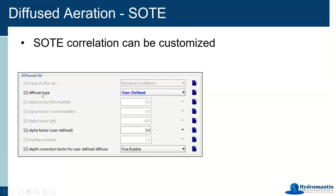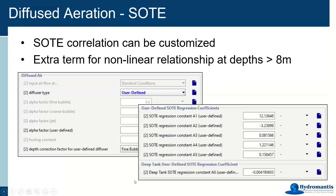Lastly, we did have that user-defined diffuser type. If you're using something a little out of the ordinary and you want more control over the oxygen transfer efficiency, you can select user-defined. You'll get your own user-defined alpha factor, and your SOTE — your oxygen transfer efficiency correlation — is now something that you can make adjustments to the parameter values that make up that equation. We even included an extra term on the end for situations where the oxygen transfer efficiency is for very, very deep tanks greater than 8 meters deep, where the relationship kind of changes.